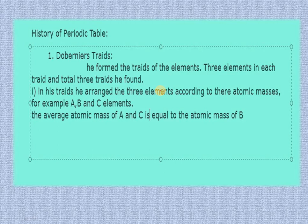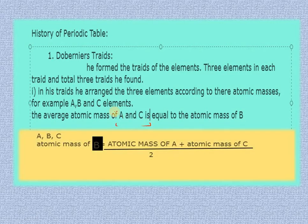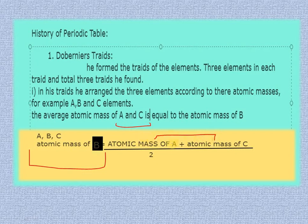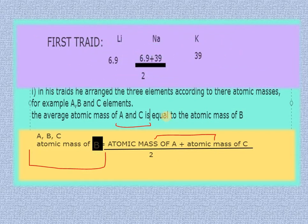We have a very good way to remember elements. You can find two elements, and you can find the third element. If you find the average atomic mass of A and C, then you can find the atomic mass of B. The atomic mass of B is equal to the average atomic mass of A and C, that is, mass of A plus mass of C divided by 2. The first example was lithium, sodium, and potassium.